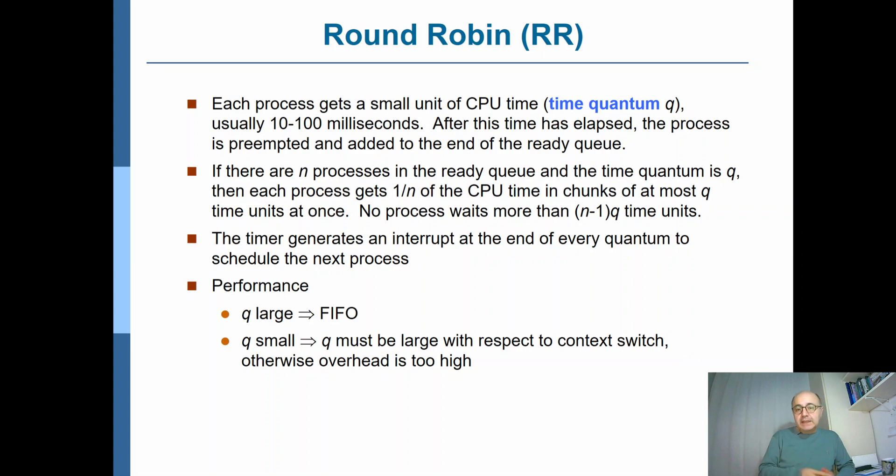In such an approach, since everyone gets to go into the CPU in a round of n processes, each process would be waiting (n-1) times that time quantum q. Therefore, no process waits more than (n-1)q time units. This is how we guarantee a limited waiting time for each process.